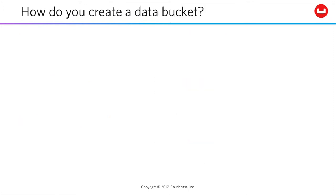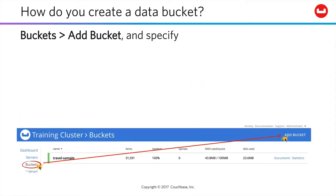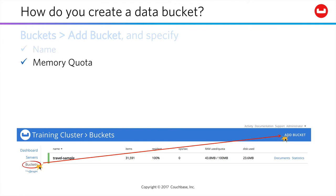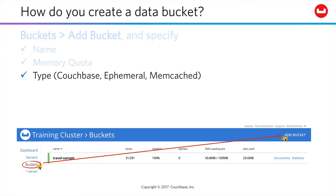Now, adding a bucket is easy. Click Add Bucket, then specify the name and the per-node memory quota. Specify the type, whether that is a persisted Couchbase bucket, a non-persisted purely in-memory ephemeral bucket, or a more limited cache, memcached style.